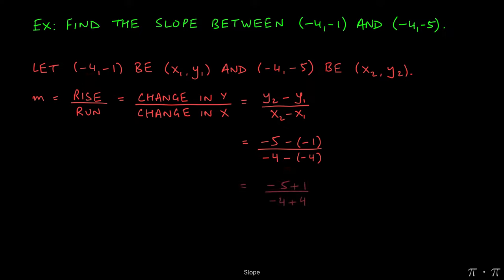Now, we can distribute the negatives to get a positive one here. Negative times a negative is positive. And then the same thing happens in the denominator as well. Negative times a negative is also a positive.